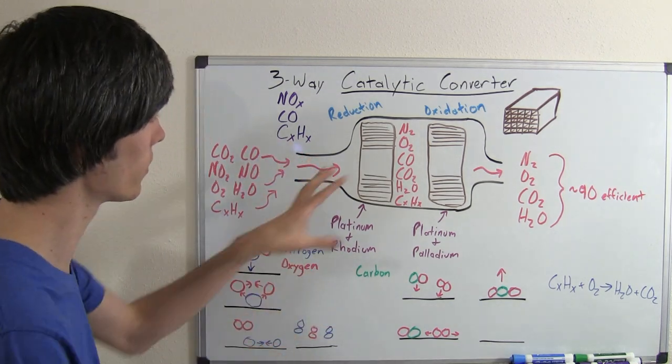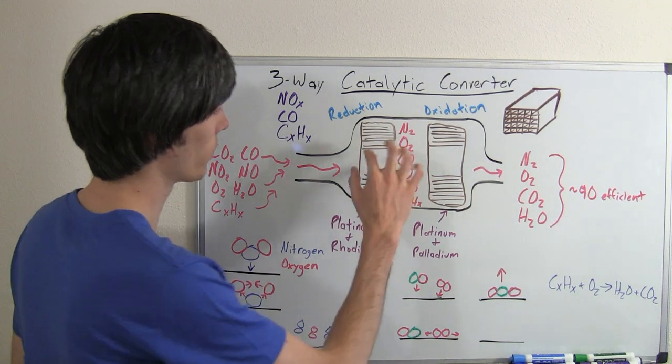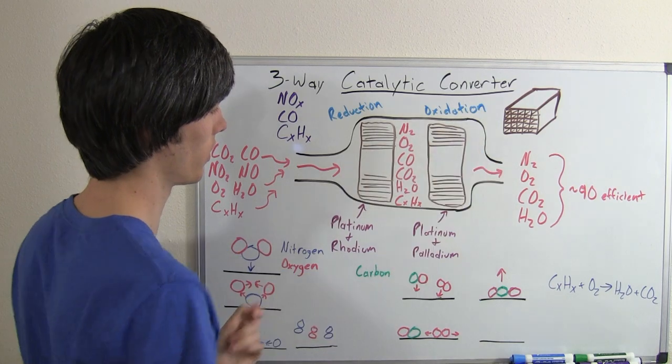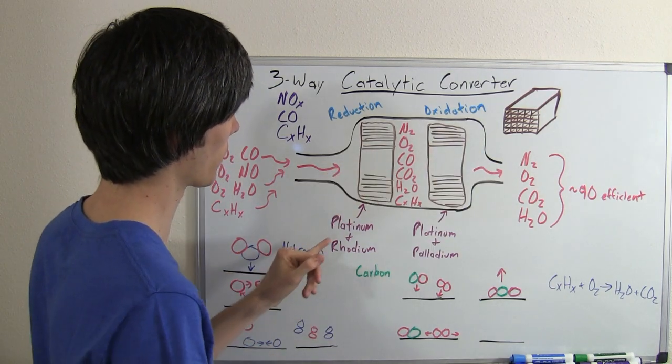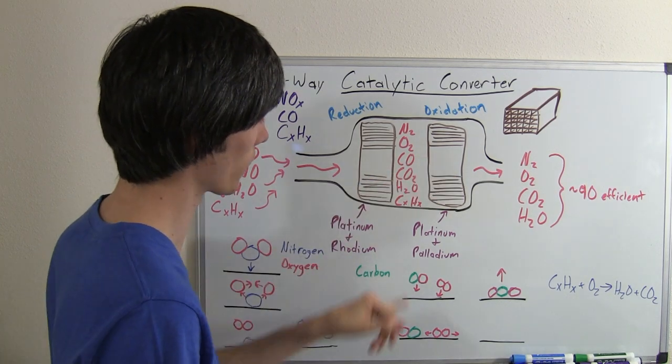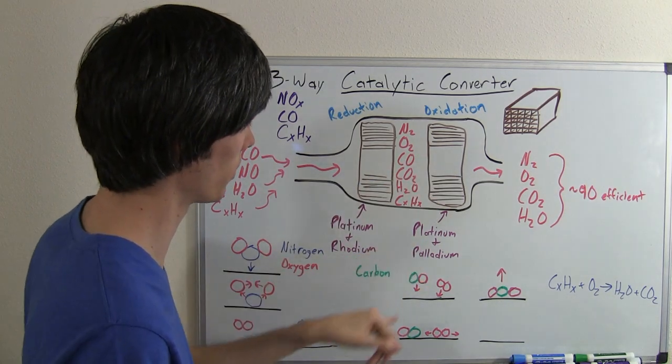So the way it does this, inside of a catalytic converter, you've got these two blocks, and one is a reduction catalyst and the other is an oxidation catalyst. The reduction catalyst is made up of platinum and rhodium, and the oxidation catalyst is made up of platinum and palladium.